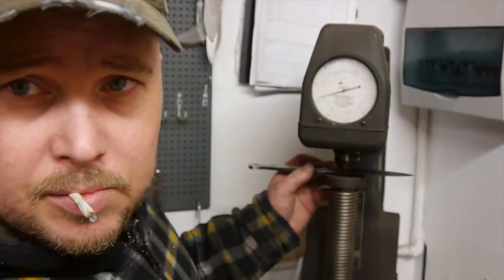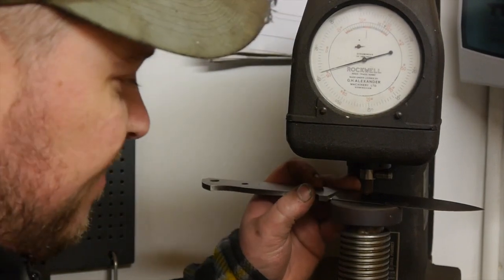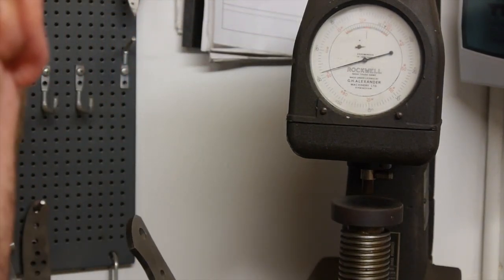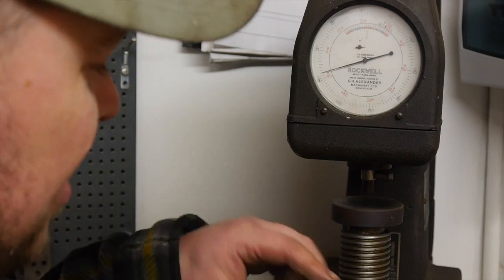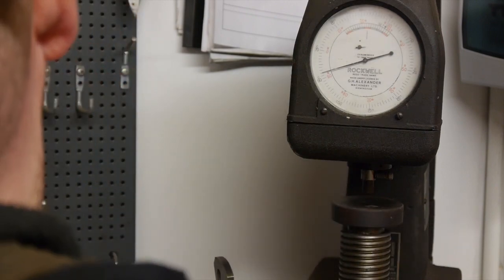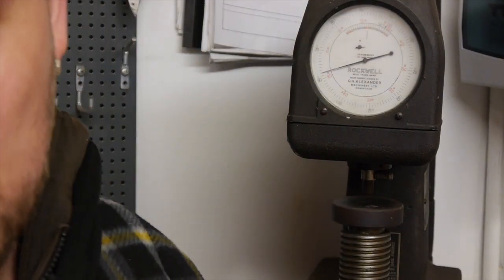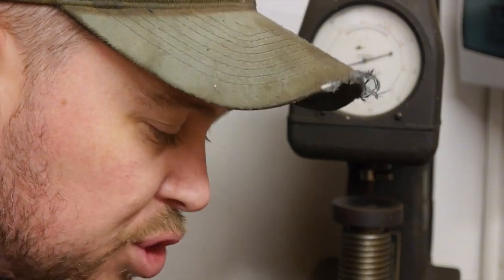So when you've got a flat blank like something like that, I like to be able to then Rockwell test all over the blade. Three, four, five, six, sometimes even all down the edge, just so that I can get some readings and then I can divide those readings and get a consistent Rockwell. So now if I was to grind my bevels off first I wouldn't be able to do that.